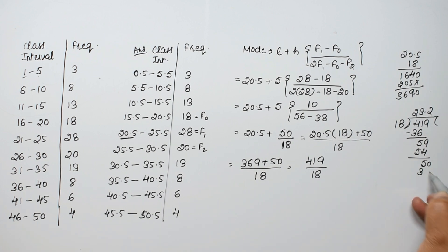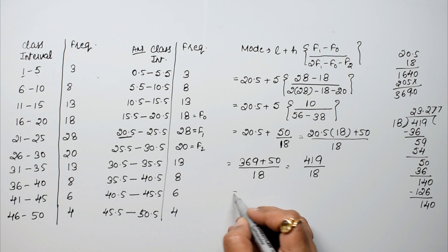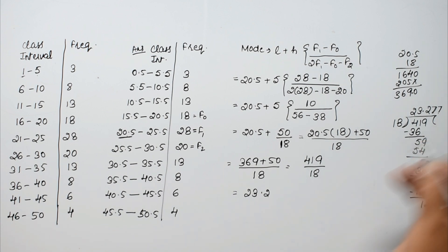18 into 50 goes 2 times, that's 36, leaving 14. Bring down 0 to make 140. 18 into 140 goes 7 times, that's 126, leaving 14 again. Since we need maximum two decimal places, we get 23.27, which rounds to 23.28.